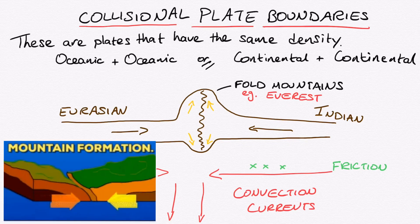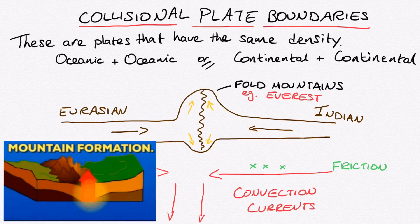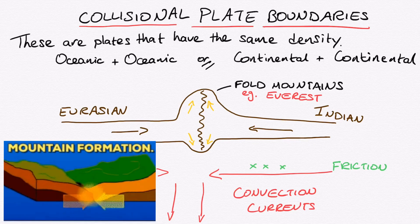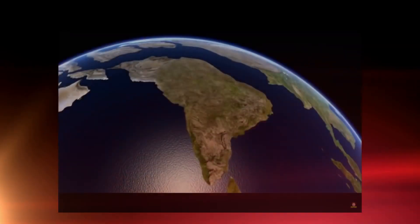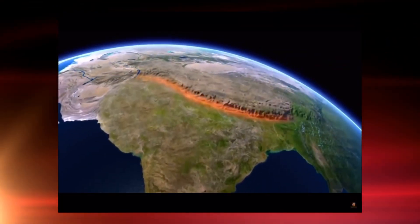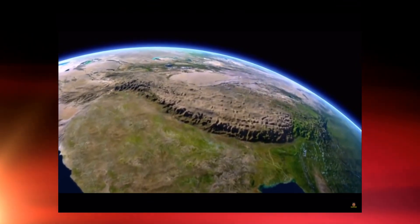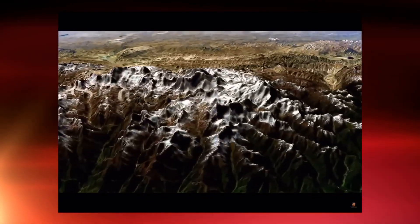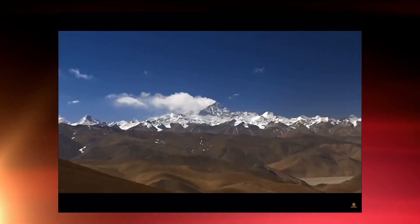As you can see in this animation, when these plates move towards each other they push upwards and also a little bit downwards, creating a very thick section of crust. In the following video you can see the continent of India moving towards the Eurasian continent, and as it comes into collision it gets pushed upwards forming the Himalayan mountain ranges and Mount Everest specifically.